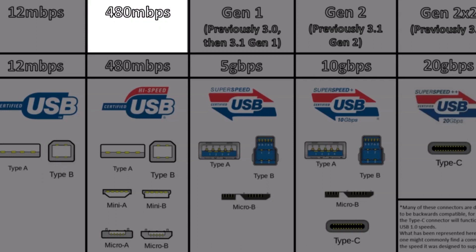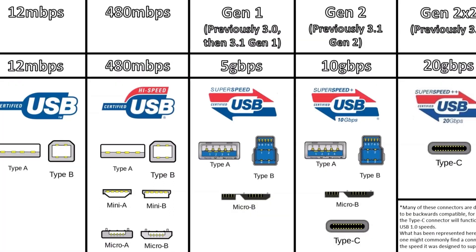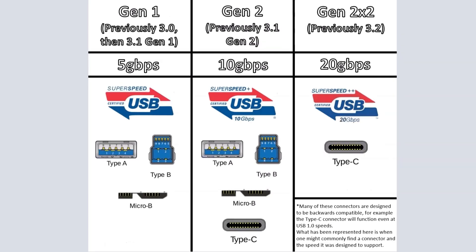Then there's USB 2.0, which operates at 480 megabits per second — that's millions of bits per second. It has all kinds of connectors: Type-A, Type-B, then Mini-B, Mini-A, Micro-A, Micro-B. I use the Micro-B connector on my rechargeable laptop, and the PS3 controller uses the Mini-B, the mini USB.